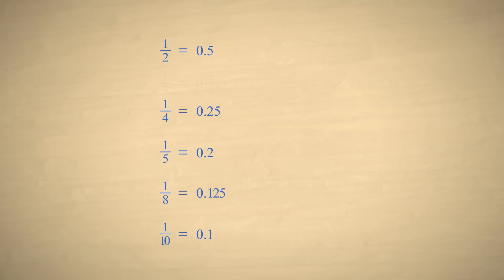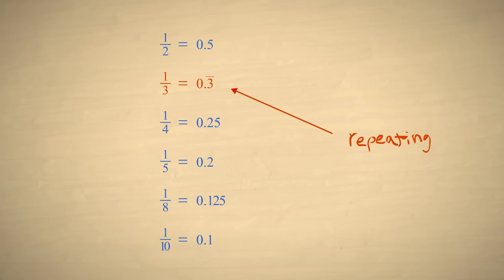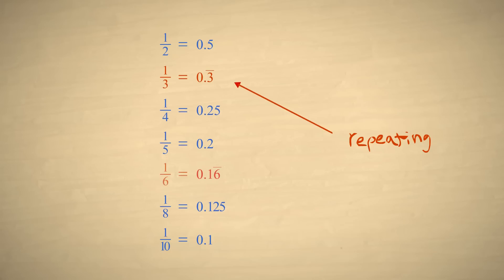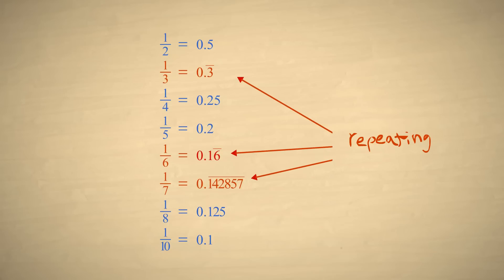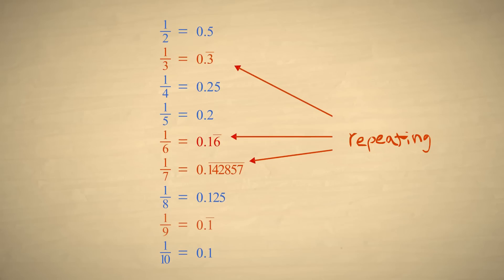On the other hand, the decimal equivalent of one-third is a decimal point followed by an infinite number of threes. One-sixth is a decimal point followed by a one and then an infinite number of sixes. One-seventh is a decimal point followed by the infinitely repeating sequence one, four, two, eight, five, seven. And one-ninth is a decimal point followed by an infinite number of ones.